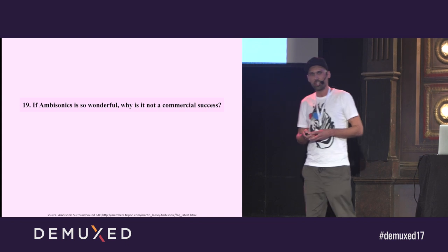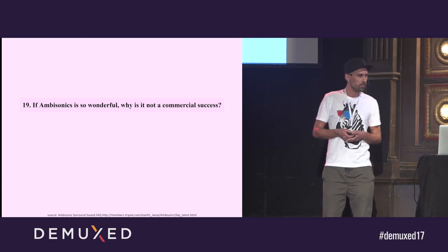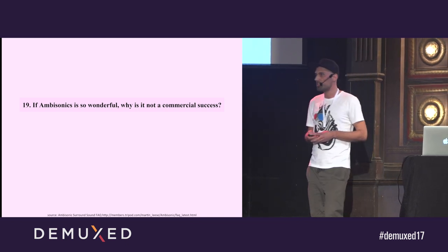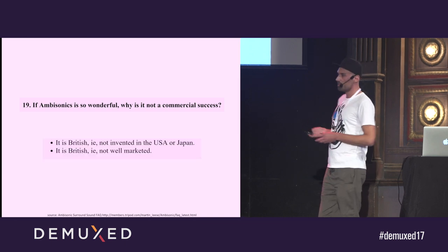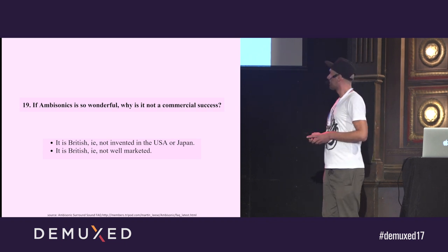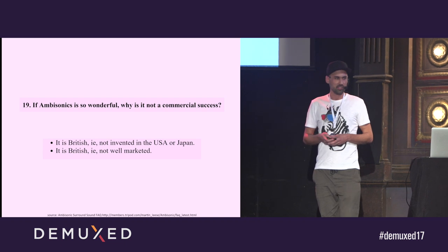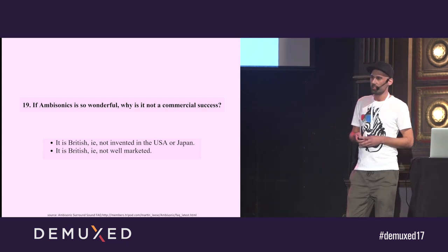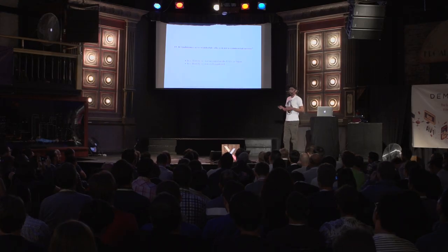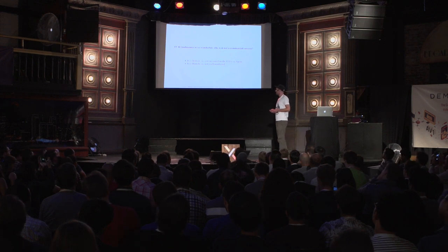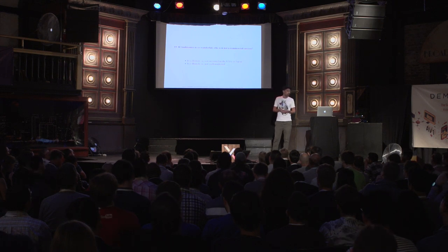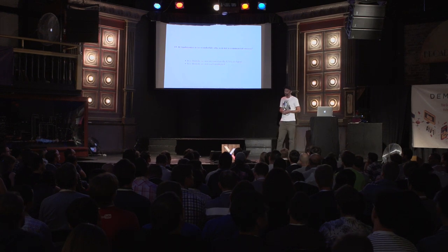But first, to conclude the ambisonics topic — if this technology is so awesome, why is it not widely used? I searched the internet a lot, and by far the best answer I found was on the ambisonic surround sound FAQ, which says: because it's British. Another explanation might be that back when it was invented, audio processing was done analog, which is pretty complicated. But nowadays, due to digital signal processing, it became much easier. Usage is actually on the rise — Google and Facebook are already using it for VR videos, and VLC 3 will also support ambisonic audio.